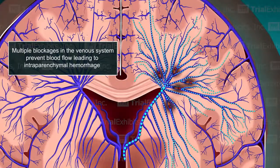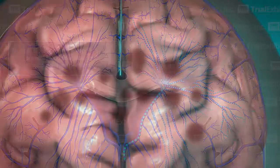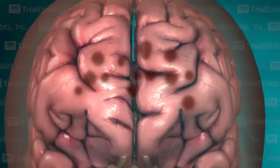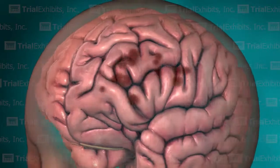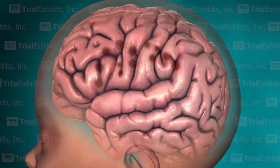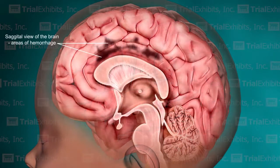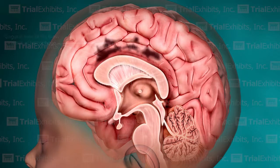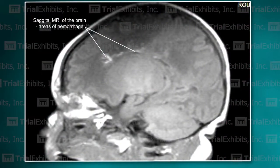The challenge was to create a presentation that would explain the location and function of the deep medullary veins, and to show how blockages of these veins lead to small areas of hemorrhage in specific regions of the brain. It would also be valuable to incorporate the actual MRI films from this case, so it is clear that the hemorrhages are directly linked to the blockages of the venous system.